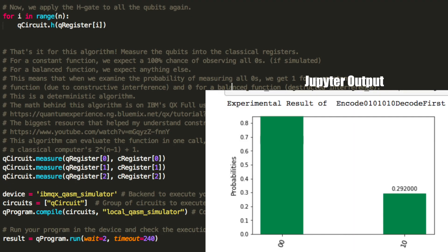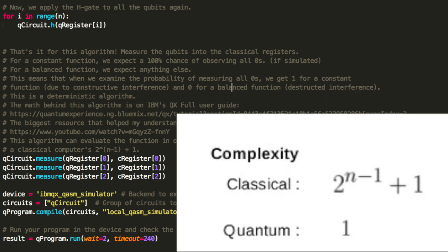And that's it for our algorithm. For a constant function, we can expect a 100% chance of observing all zeros, and for a balanced function, we can expect anything else. This shows that a black box problem can be solved efficiently by a quantum computer with no error, whereas a classical computer would need way more queries to the black box to solve the problem.